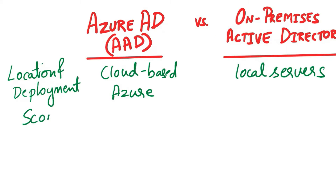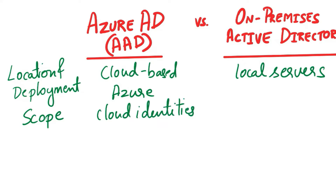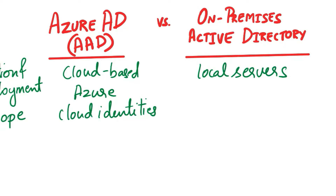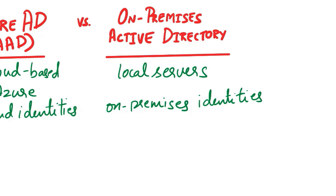The next aspect of comparison is scope. Azure AD is primarily for cloud identities, used for cloud apps and services. On-premises AD is primarily for on-premises identities, managing resources within an organization's network.